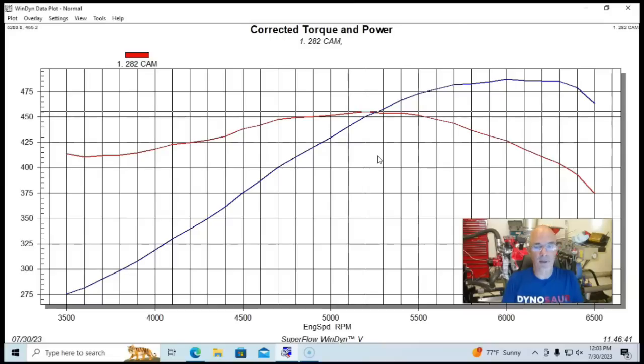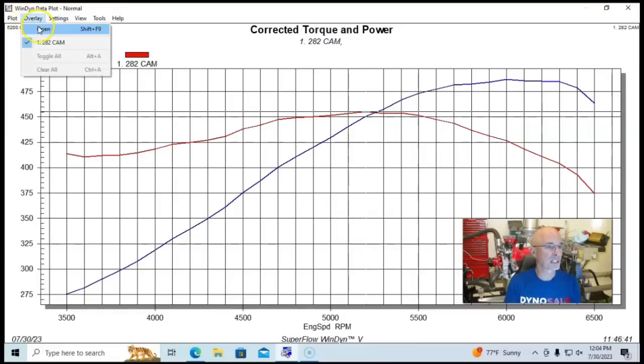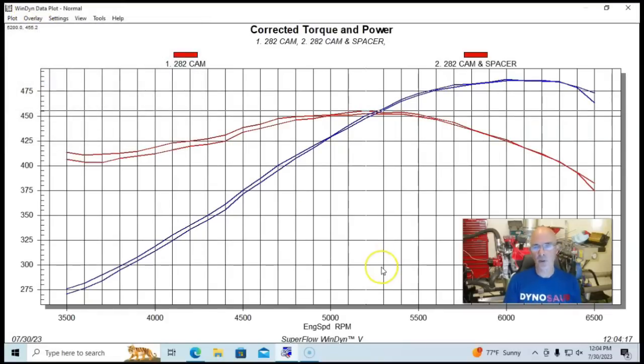So now let's take a look and see what happened when we added the first test that we did, because it's very simple. And this is something that we normally try on most carbureted applications. Hey, we have a spacer. Let's just put it on there. We put the long studs in there. This was a one inch open Wilson spacer. Let's take a look at that. So we ran the spacer with a single plane intake manifold.